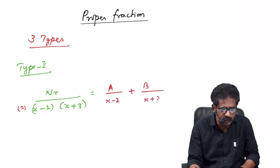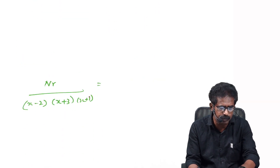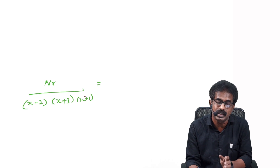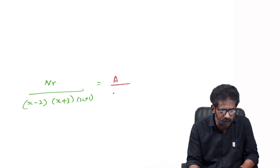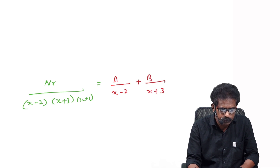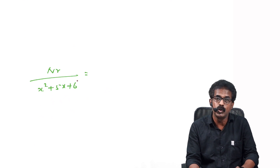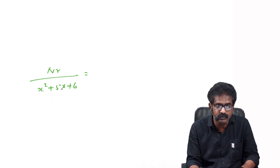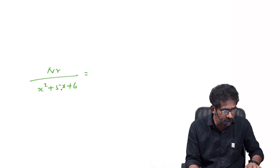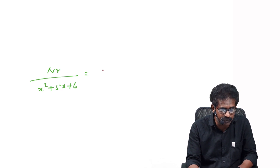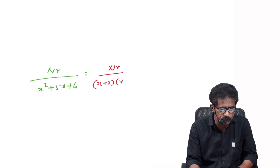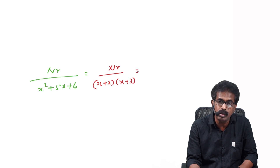Sometimes instead of two factors they may give three linear factors, which can be written as A over the first factor, plus B over the second factor, plus C over the third factor. Sometimes the denominator is given as x²+5x+6, which is not already factored — but you can factorize it as (x+2)(x+3). This is also the first type, written as A/(x+2) plus B/(x+3).